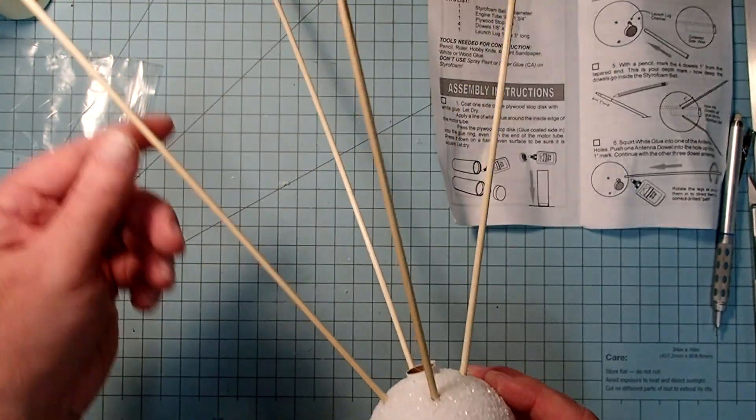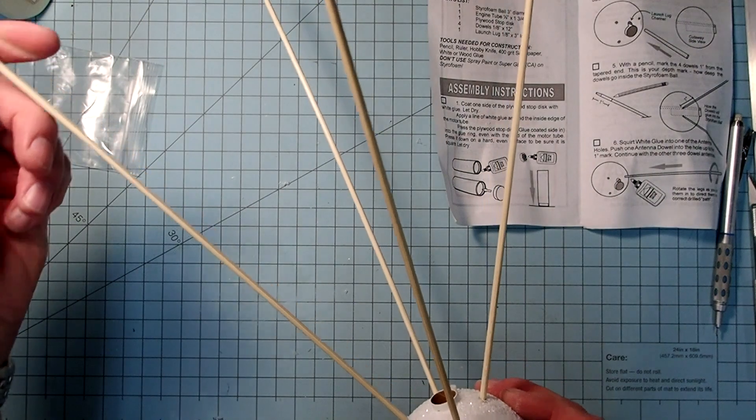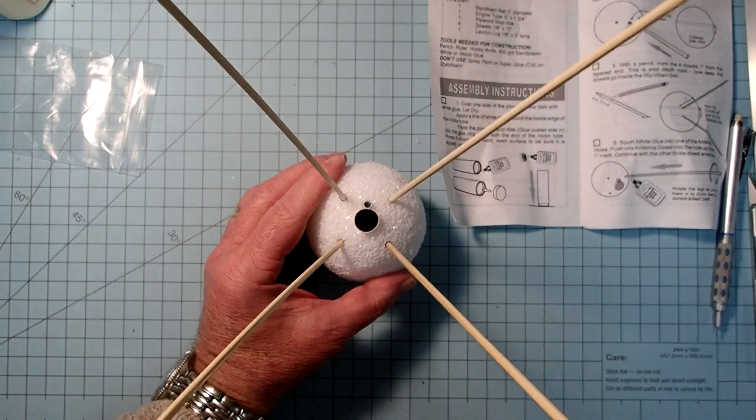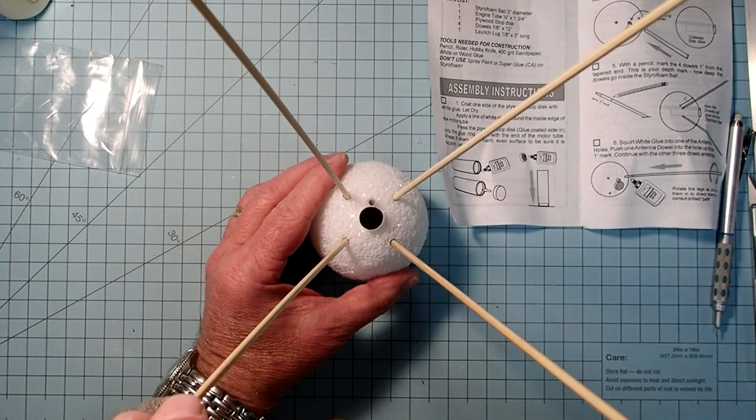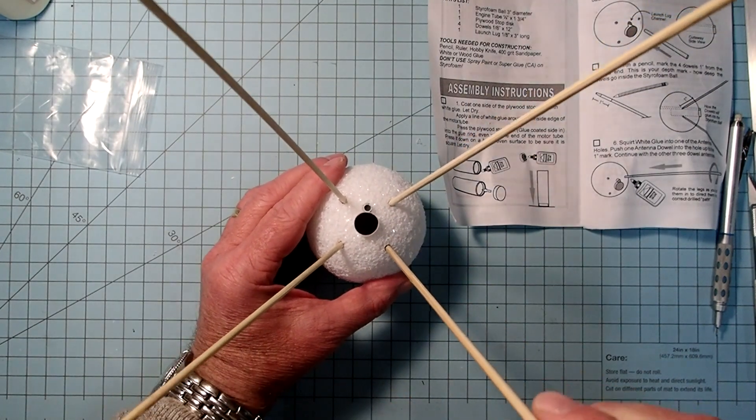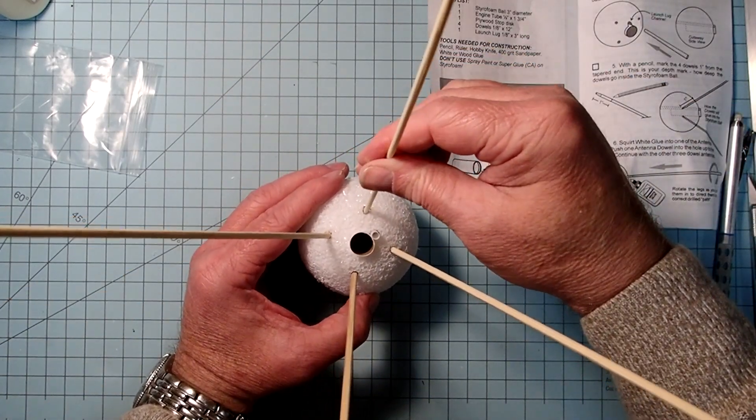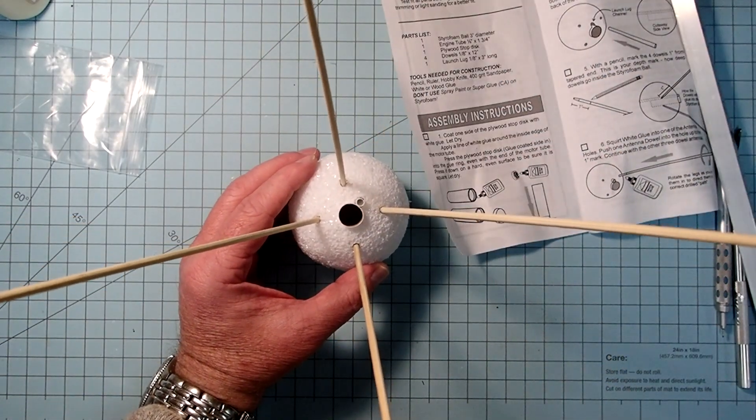Some of my dowels are a little bit warped here, but it looks like the overall position is pretty good. And we can turn these to some extent to kind of make the warping less noticeable.